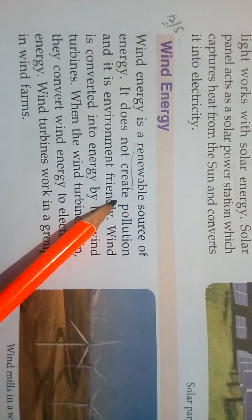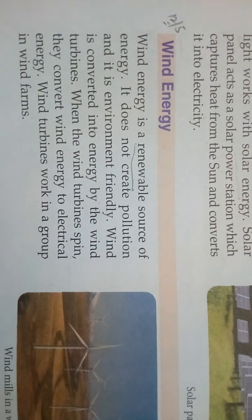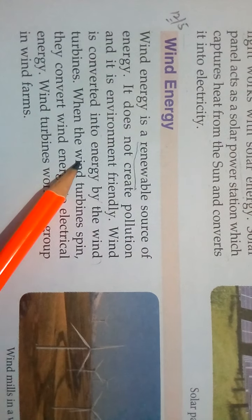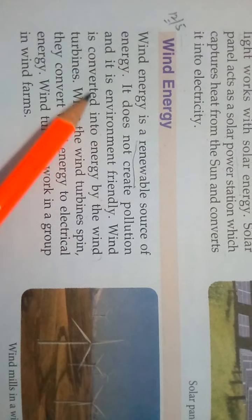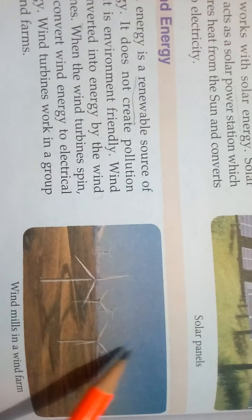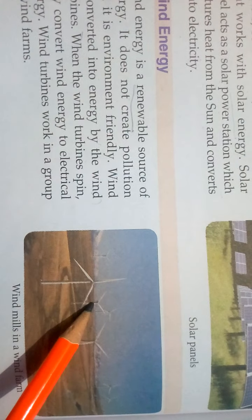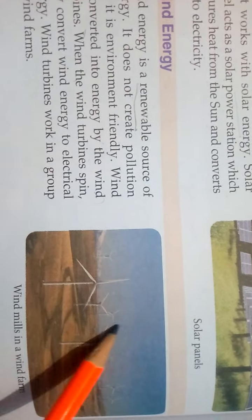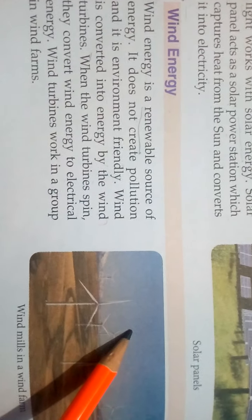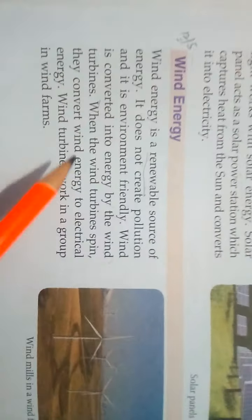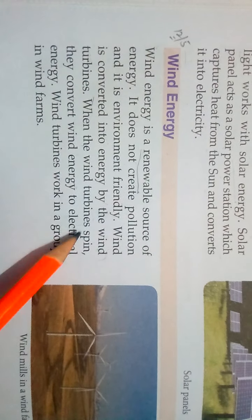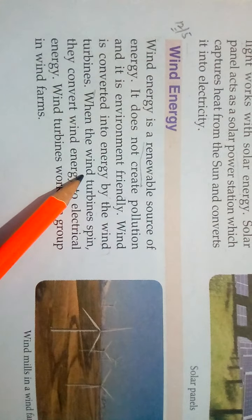Wind energy is environment friendly. Wind energy is converted into electrical energy by wind turbines. When the wind comes over the turbines, the turbines spin, and the energy is converted into electrical energy. When the wind turbines spin, they convert wind energy to electrical energy.